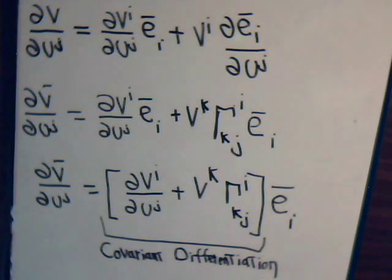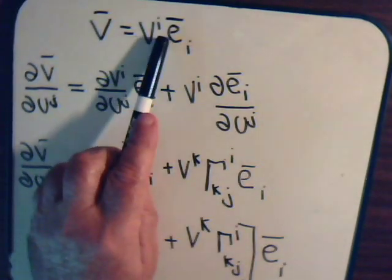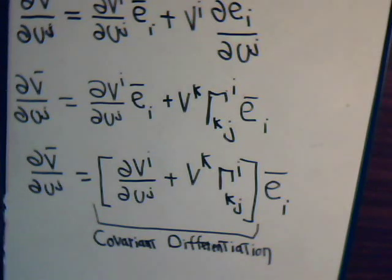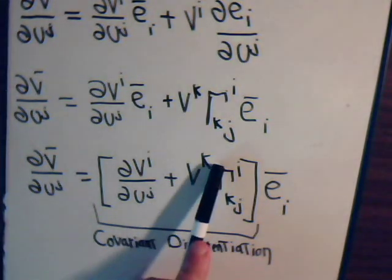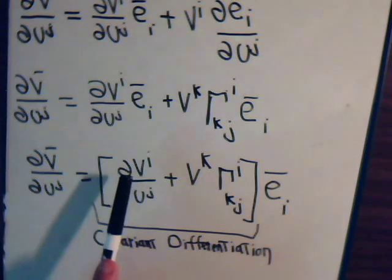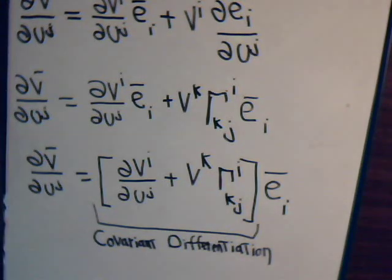This means that you can have a vector or tensor expressed with contravariant components, do the differentiation including this term, and you will get another tensor. Now, if we are in Cartesian coordinates, then the Christoffel symbol is zero. So for Cartesian coordinates, all you have to do is take the partial derivatives of the components of a vector and you will get a tensor. That's pretty straightforward to show.